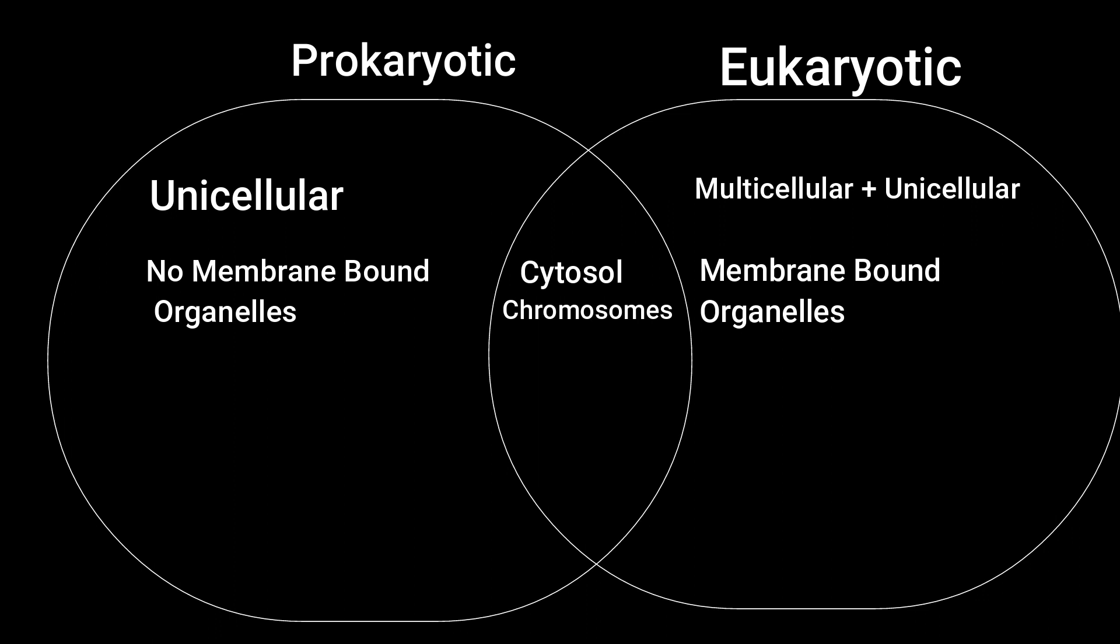They also have a semipermeable plasma membrane that regulates materials entering and exiting the cell. One of the main differences between prokaryotic cells and eukaryotic cells is how they store DNA.